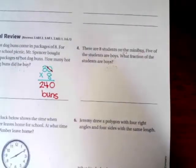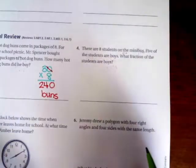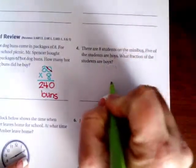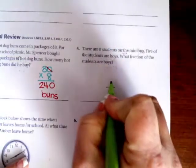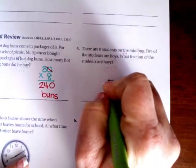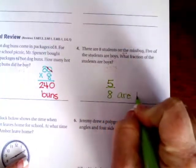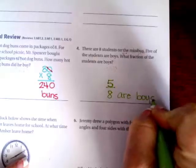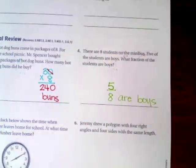There are eight students on the minibus. Five of the students are boys. What fraction of the students are boys? Well, if there's eight students all together, and five of them are boys, five eighths are boys. We have the total number of kids and how many were boys.